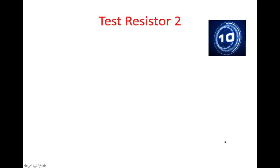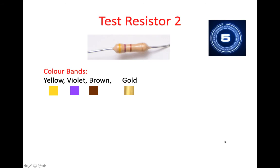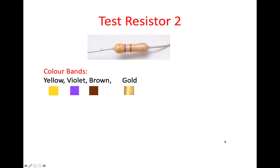Test resistor two. Here we have yellow, violet, brown, and gold. The first colour band is yellow, which represents 4 — the first digit of the resistance value. The second band, violet, has a value of 7, which represents the second digit of the resistance value.